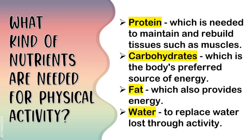What kind of nutrients do you need to be able to do these physical activities? First, you need protein, which is needed to maintain and rebuild tissues such as muscles. Second, carbohydrates — this is the body's preferred source of energy. Third is fat, which also provides energy. And lastly, water, which will replace water lost through activity.